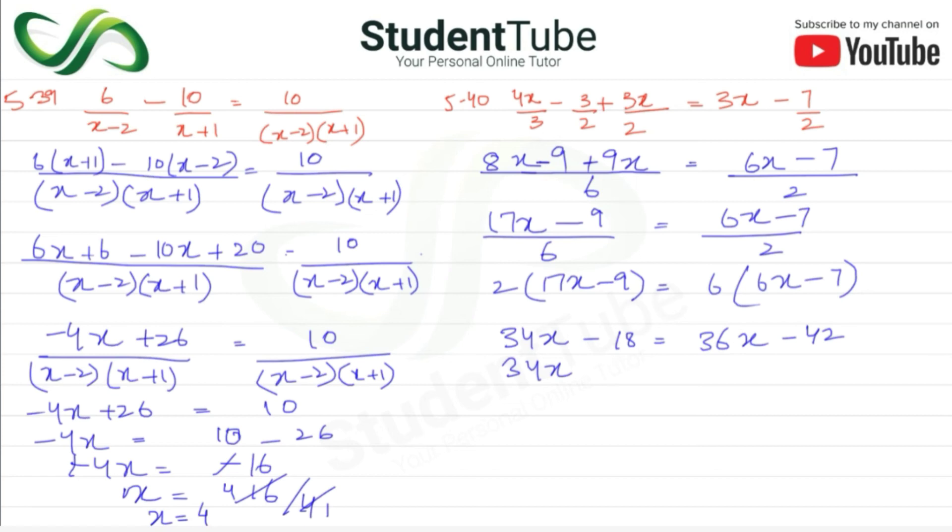So 34x minus, plus 36. There is plus, here it becomes minus. Is equal to minus 42 plus 18. So here is minus 2x is equal to, this becomes minus 42 minus 18, which is minus.